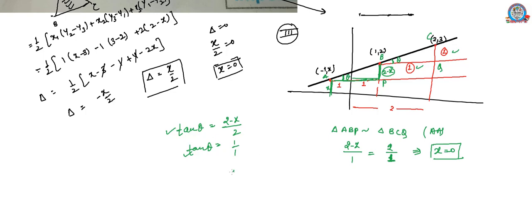Both angles are equal so obviously the ratio of tan is also equal. So (2 minus x) by 2 also equals 1 by 1. After solving this we can get x equals 0.